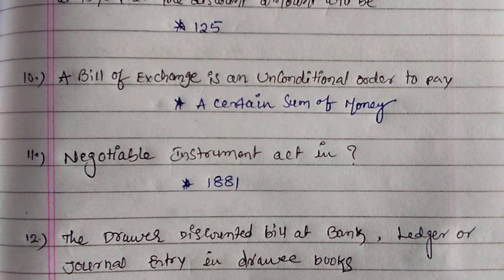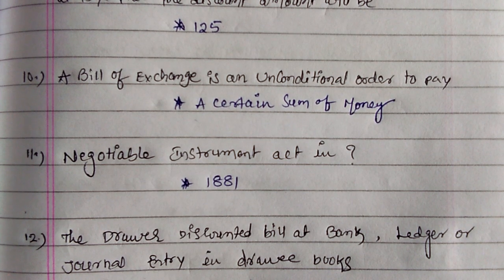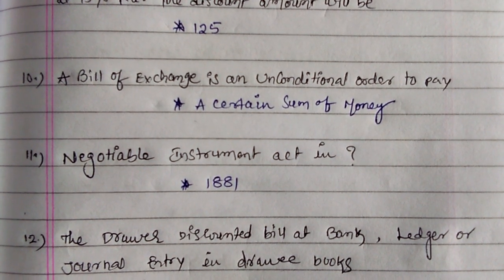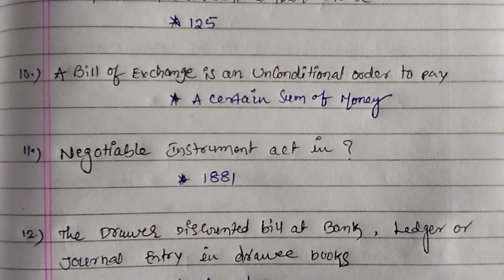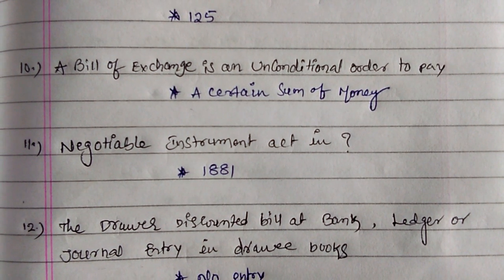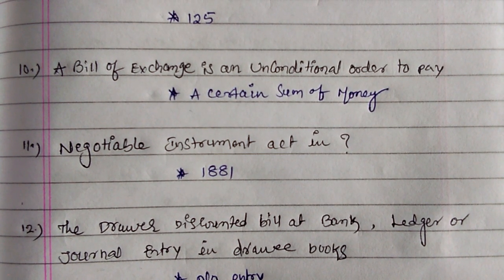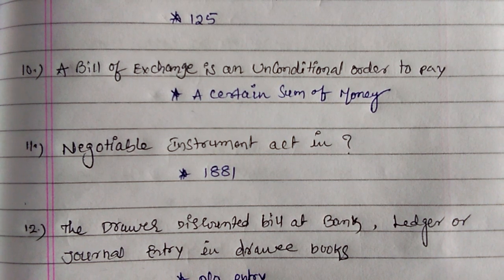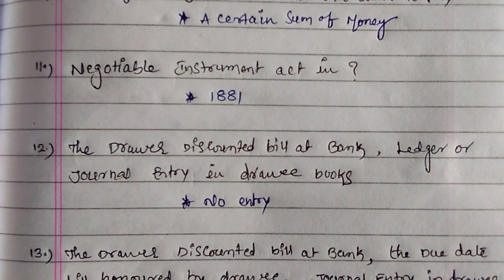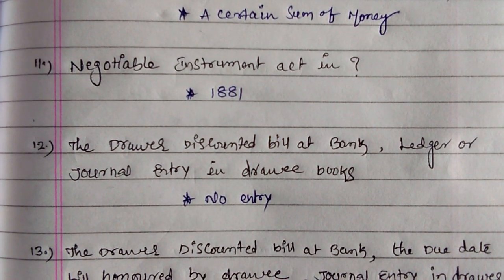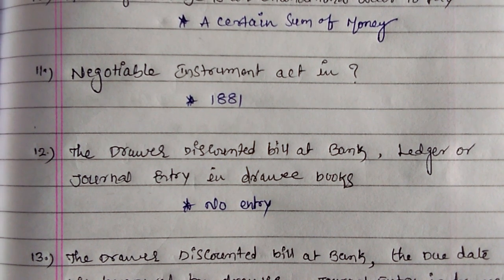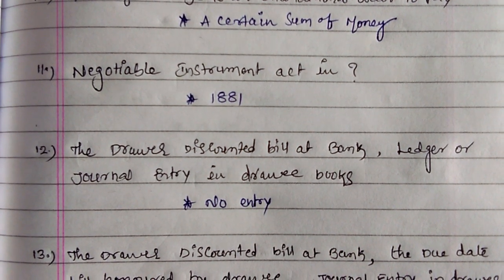Next: a bill of exchange is an unconditional order to pay a certain sum of money. Every bill is written as unconditional for a certain sum of money. And next one is the Negotiable Instruments Act of 1881.